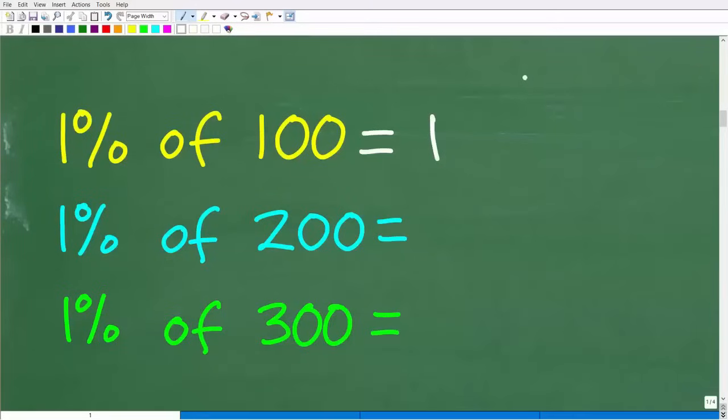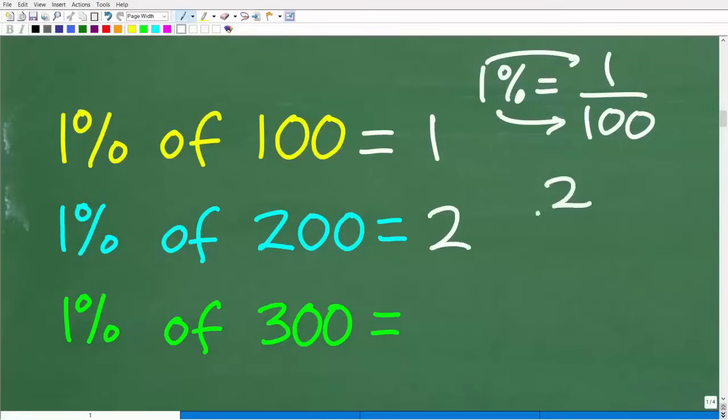By definition, percent is, let me write this right here, 1% is equal to 1 over 100. So percent, by definition, is when we compare a number to 100, where 100 is the denominator. That's what percent is. Now, knowing that, let's talk about what 1% of 200 is. So what is 1% of 200? Well, hopefully you said 2. That's going to be 2 over 200. 2 out of 200 is 1%. Why is that? Well, we can reduce this fraction right here. And now we have 1 over 100.